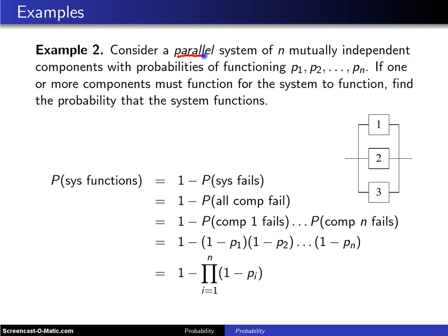So in this case we look at the parallel system. The same assumptions are in place. We have N mutually independent components with probabilities of functioning P1, P2 up to Pn.